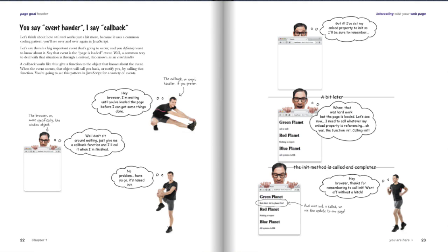It turns out that events are a crucial part of creating interactive webpages because interactivity means that the user of your webpage is doing stuff — things like moving their mouse, clicking on buttons, or filling out forms. And the browser is doing stuff too, like loading your page or perhaps going out and getting more data from a web service. All these activities generate events, and your code needs to be prepared to deal with them.